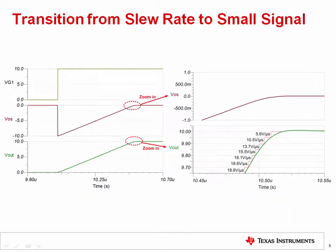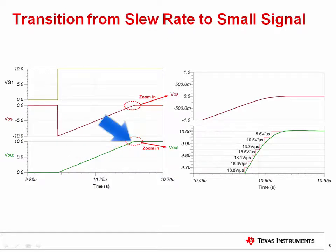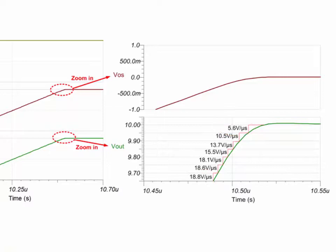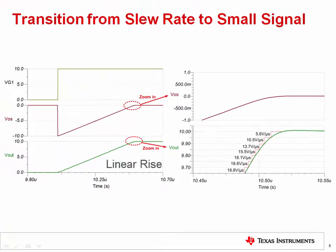Let's take a closer look at the output of the non-inverting buffer circuit with a 10-volt step applied to the input. In this case, the device is in slew rate limit of 20 volts per microsecond. However, when the signal approaches the final value of 10 volts, the op-amp will transition to a small signal response. Zooming in on the last 300 millivolts of output signal swing, you can see that the rate of change decreases from approximately the slew rate of 20 volts per microsecond to a lower rate of approximately 5 volts per microsecond, and the shape changes from linear to exponential.